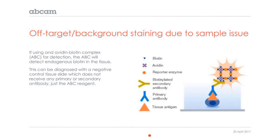Off-target staining due to endogenous biotin in the sample is an issue if you're using an avidin-biotin complex (ABC) reagent for detection. That will stick directly to any endogenous biotin present in the tissue.